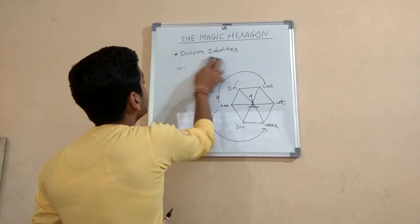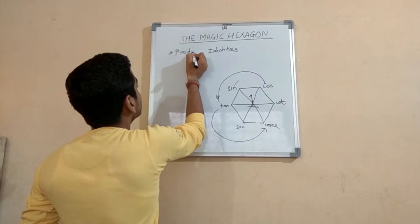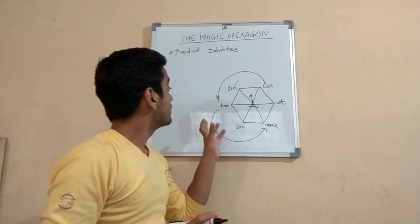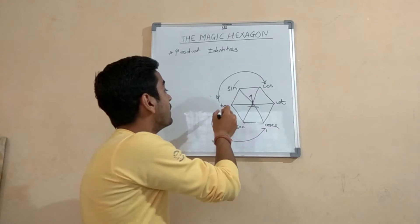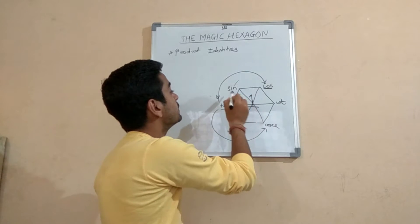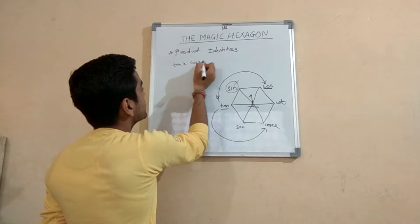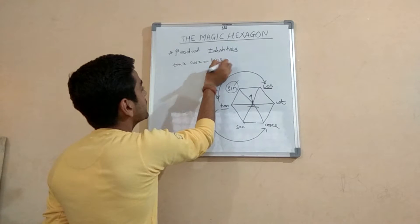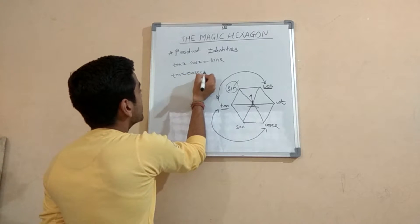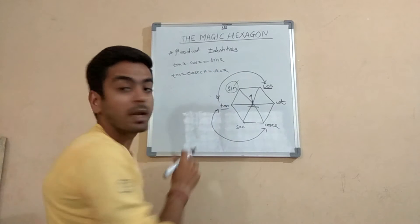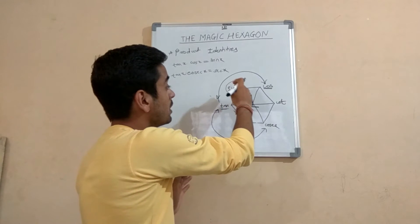Next we are going to see the product identities. For this type you make the arrow two-faced, and the multiplication of two adjacent functions is equal to the middle function. So if you write tan x times cos x, it will be equal to sin x. In the same manner, tan x times cosec x will be equal to sec x. This applies for the whole hexagon.